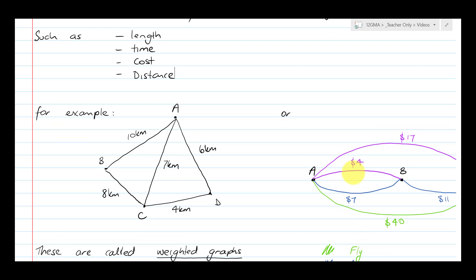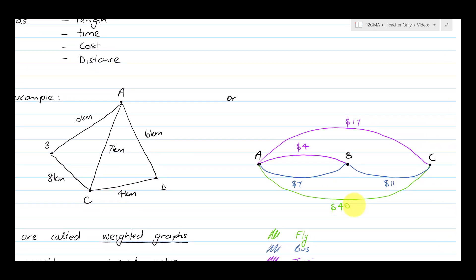So here's a graph, and we might have four towns A, B, C and D, and they're separated by these distances on a road network. Or here's a graph A, B, C, and there might be some cost associations.